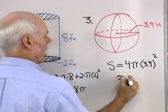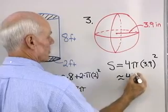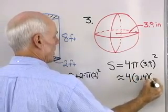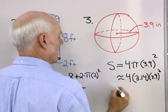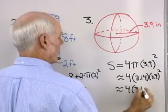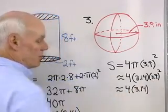So I'm going to substitute now for π, so I'll use approximately 3.14 times 3.9 quantity squared, 4 times 3.14 times 3.9 squared.